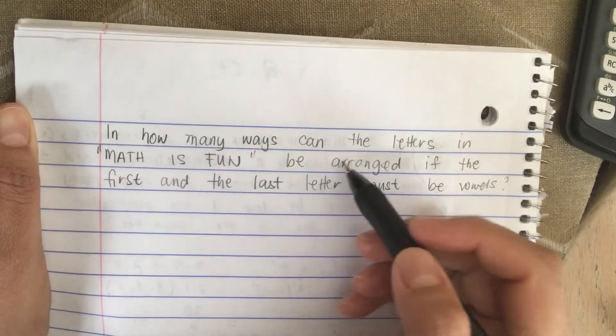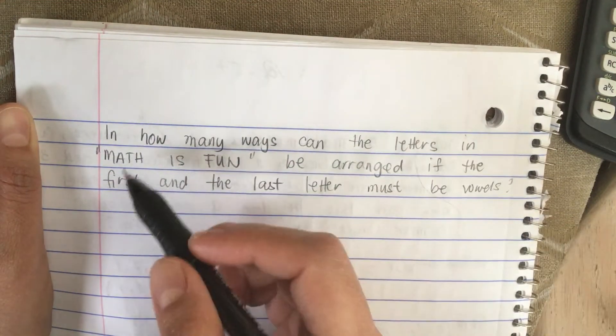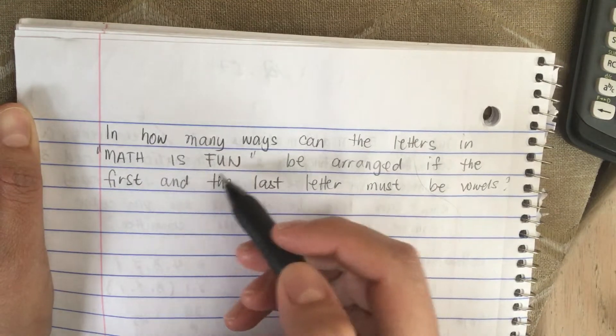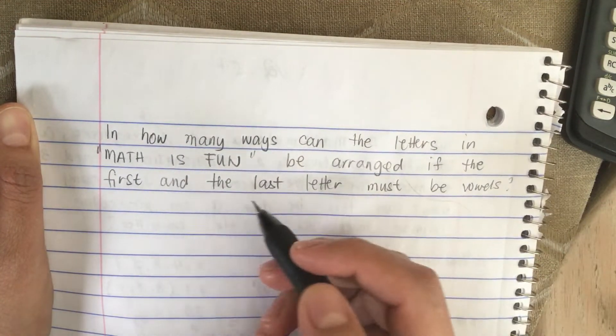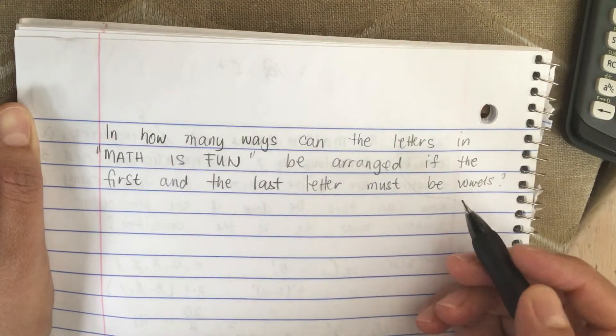In how many ways can the letters in MATH IS FUN be arranged if the first and the last letter must be vowels?